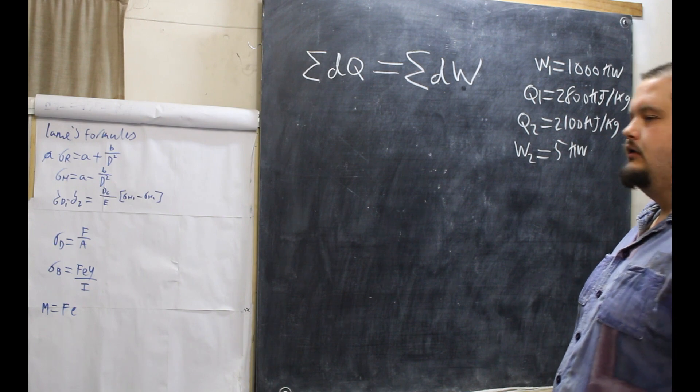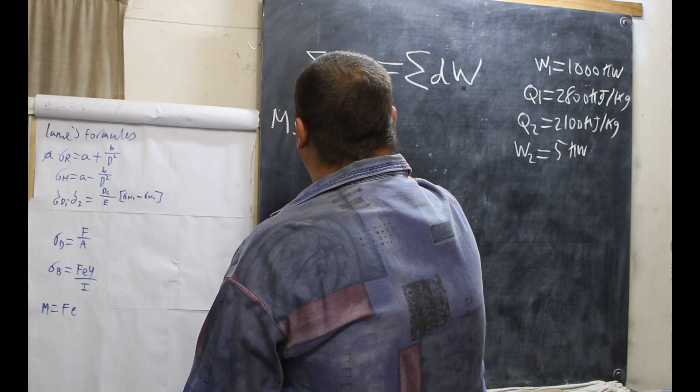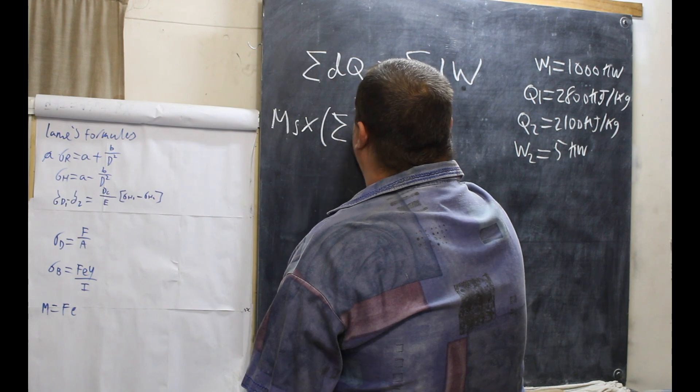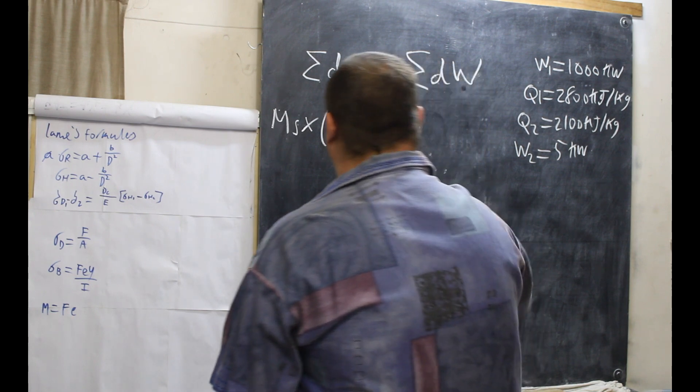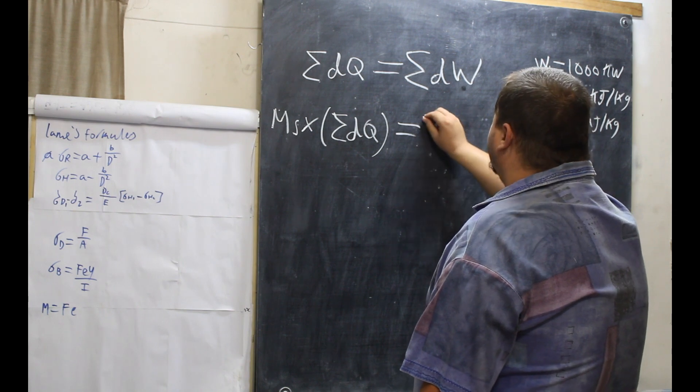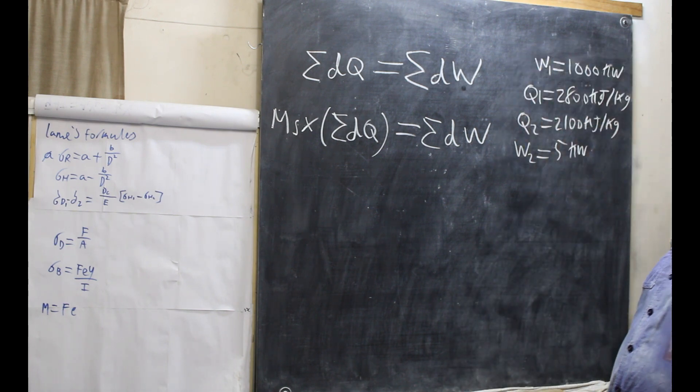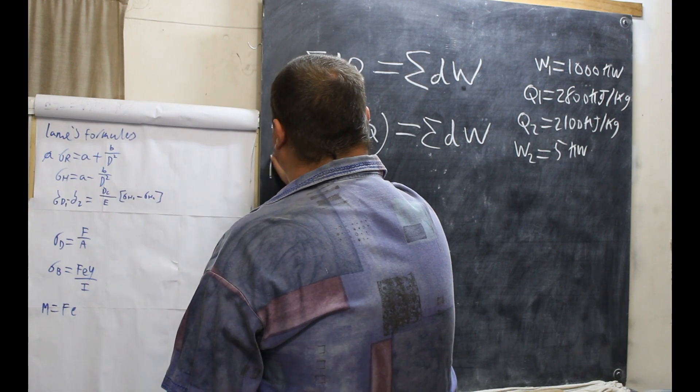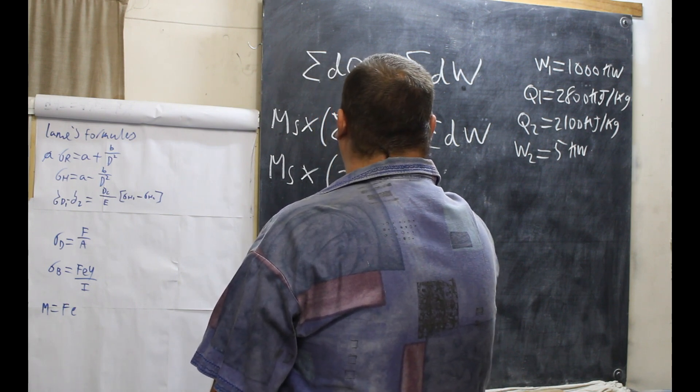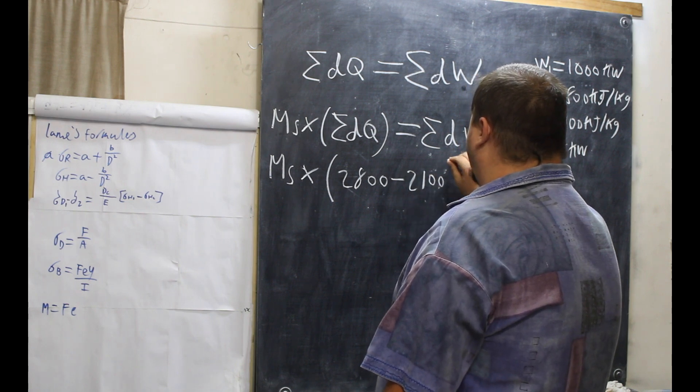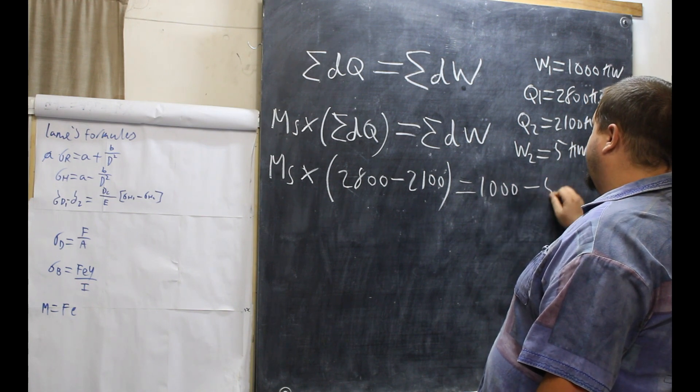So our steam flow is mass of steam times our sum of DQ. In this case, it will be negative, equals our sum of D work. So what we need to calculate is MS.